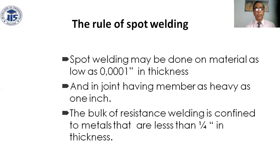Rules of spot welding: spot welding may be done on materials as thin as 0.0001 inch. Joints can have members as heavy as 1 inch, though the bulk of resistance welding is confined to metals less than 1/4 inch thickness.